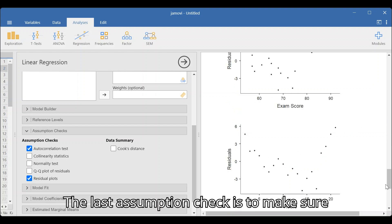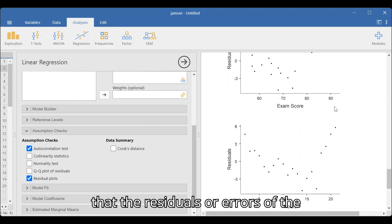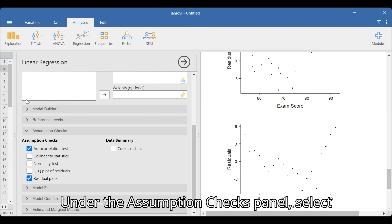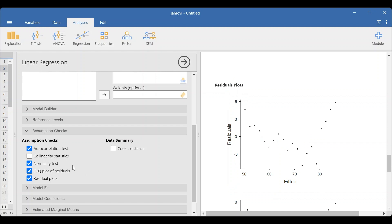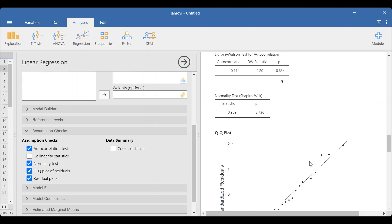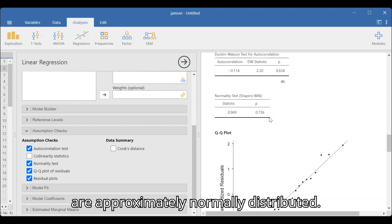The last assumption check is to make sure that the residuals or errors of the regression line are approximately normally distributed. Under the Assumption Checks panel, select the Normality Test and QQ plot of residuals. Here, the p-value of the Shapiro-Wilk is greater than 5% or 0.05. This indicates that the residuals or errors are approximately normally distributed.